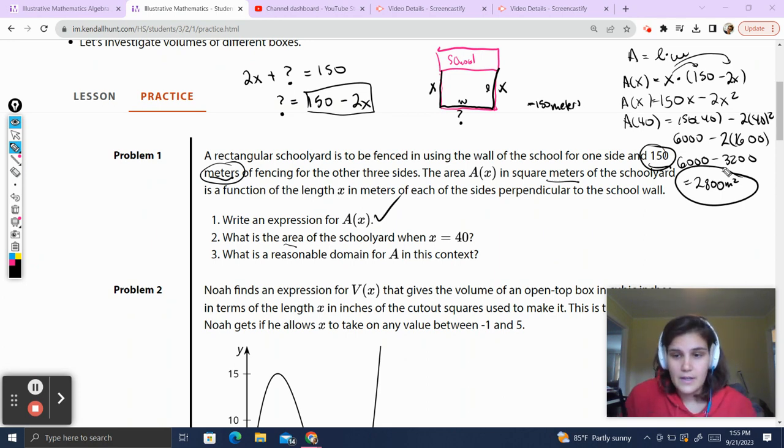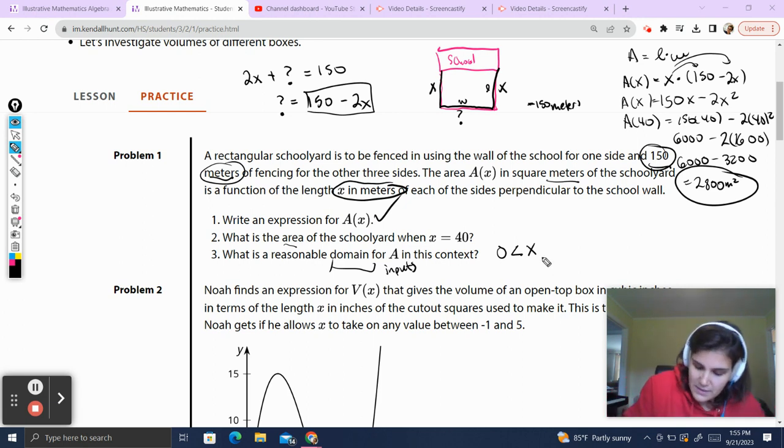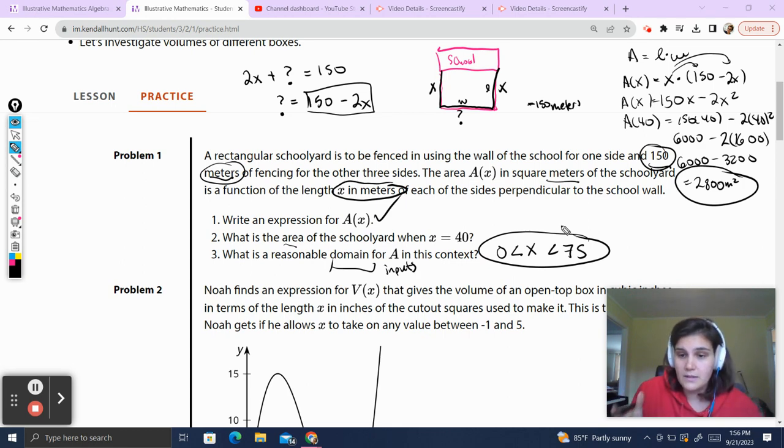Make sure to have your handy-dandy calculators available in case you need to do some calculations. Three, what is a reasonable domain for A in the context? So domain means inputs. And what we are inputting for x in this case is x is the length in meters of each of the sides perpendicular to the school wall. So that means it's going to be this length over here. Now, the shortest this length could be is, we're going to say it could get real close to 0, but we can't be 0. So I'm going to say x has to be greater than 0.